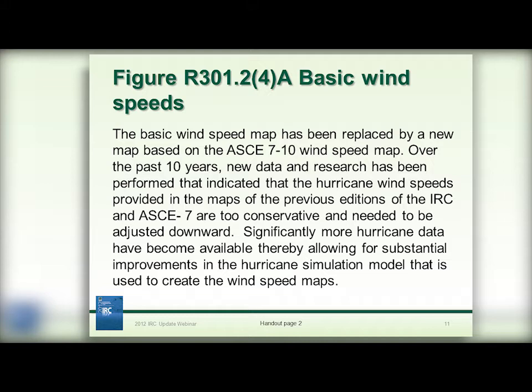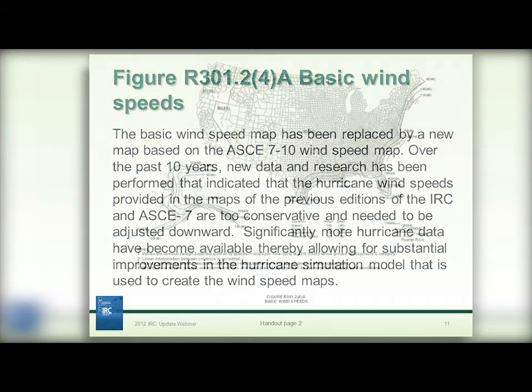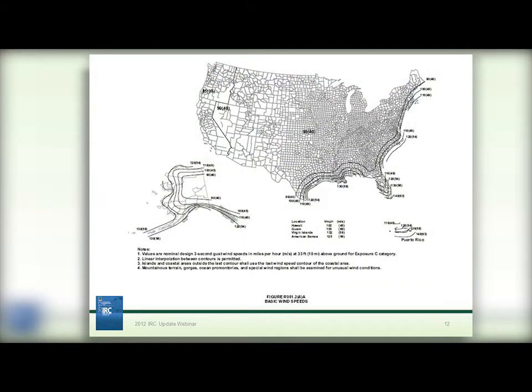Based on new data and research performed over the past 10 years and improvements in modeling of coastal high wind events, hurricane wind speeds have been adjusted downwards. To update and coordinate the provisions of the 2012 IRC with the 2010 edition of ASCE 7, the results of this data are reflected in the new map for nominal basic wind speed, which is figure R301.2(4A).